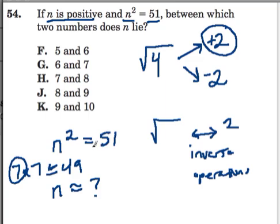So there's only one choice here. It has to be H because 7 was too small and the next number that I could use would be 8. Between which two numbers does it lie? It's got to be between 7 and 8.